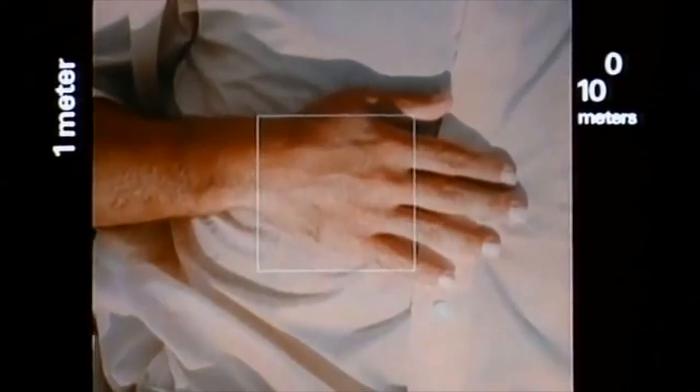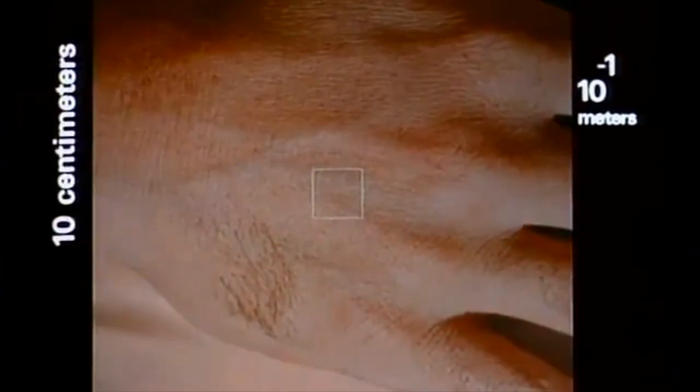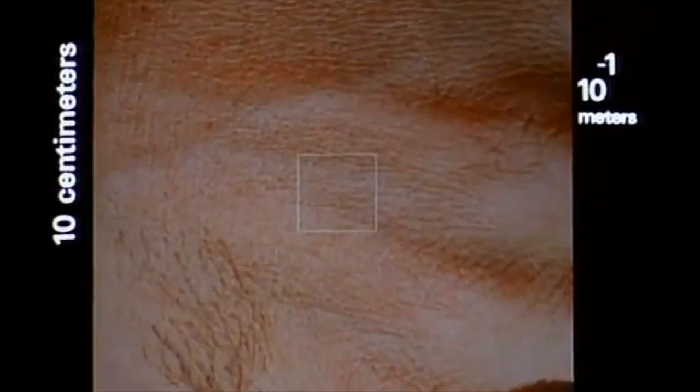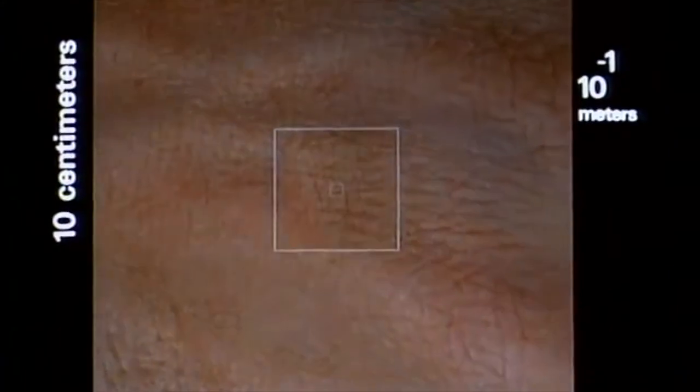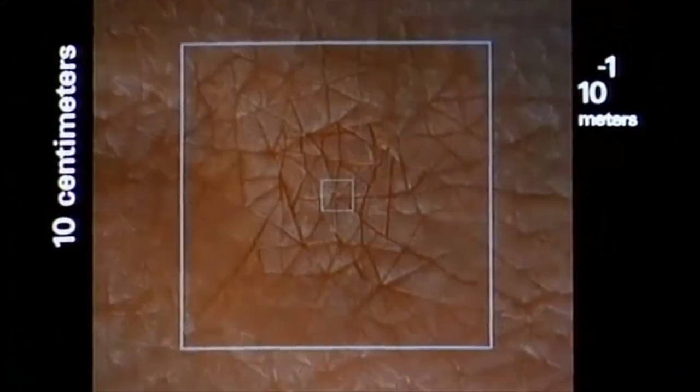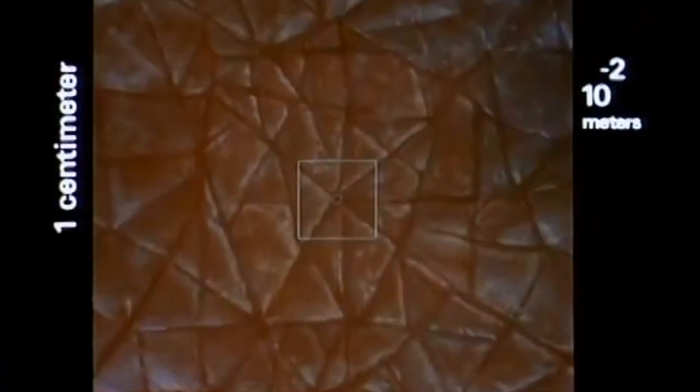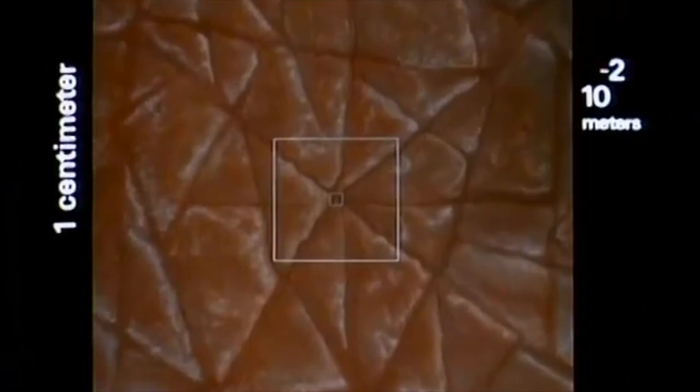We are back at our starting point. We slow up at one meter, ten to the zero power. Now we reduce the distance to our final destination by 90% every 10 seconds, each step much smaller than the one before. At ten to the minus two, one one-hundredth of a meter, one centimeter, we approach the surface of the hand.